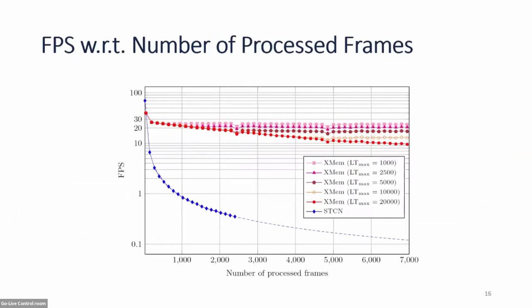We show FPS with respect to the number of processed frames. The blue curve for STCN shows it slows down considerably as it processes more frames, since a larger memory bank takes more time to read from. The other curves are all X-MEM with different LTMAX values — the maximum number of elements kept in long-term memory. Once the long-term memory reaches that limit, we simply discard the least frequently used elements. Our method slows down much less, and when LTMAX is reached, runtime becomes constant.